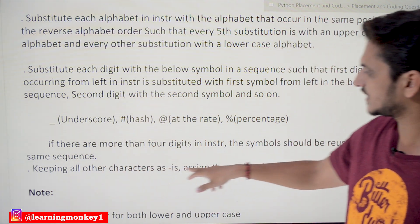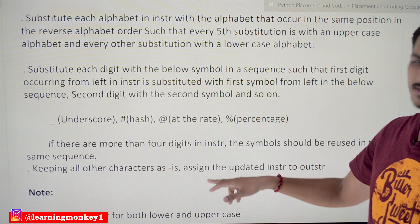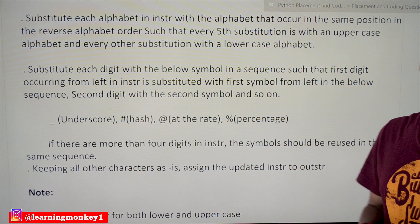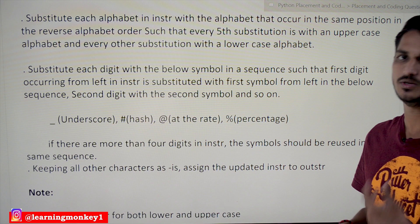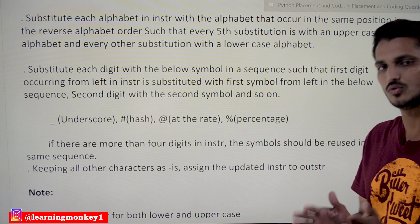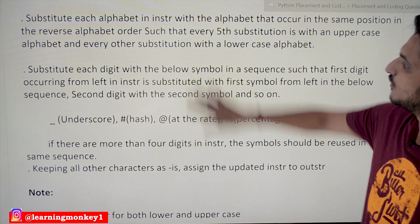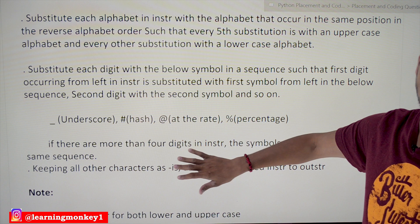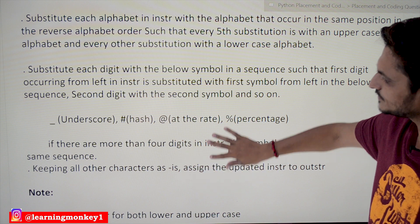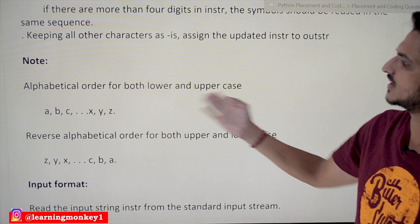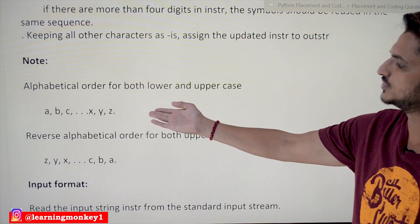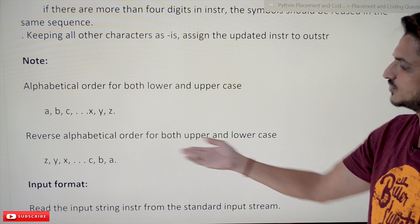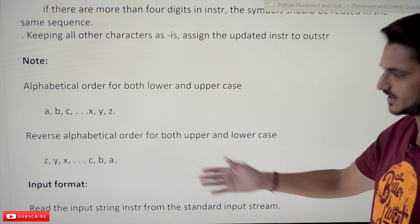The third condition is to keep all other characters as-is. Assign the updated string to 'outstr'. The alphabetical order is a, b, c up to z; the reverse alphabetical order is z, y, x and so on down to c, b, a. They have given sample input and output strings.